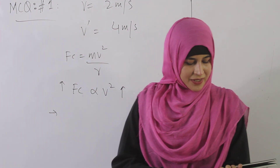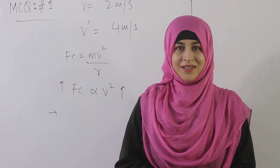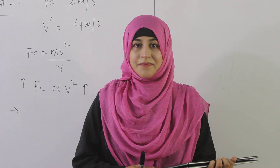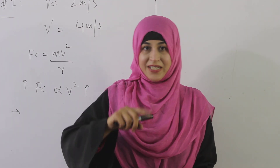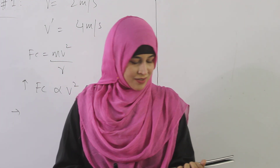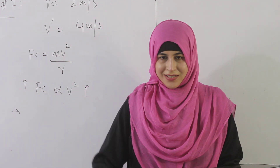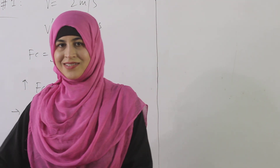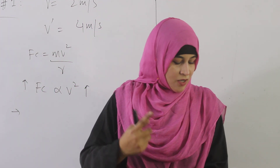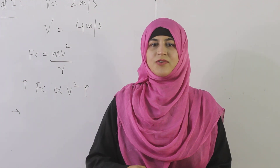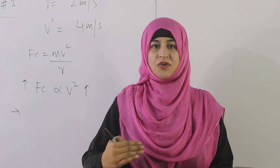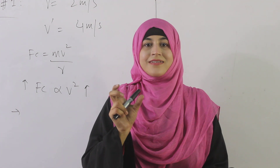MCQ number two: Under what condition will an object have zero displacement but non-zero distance? The question asks: which condition gives zero displacement but non-zero distance? Option A is linear motion — in linear motion, both distance and displacement are non-zero. Option B is circular motion — this is a possible answer, but we should check the remaining options as well.